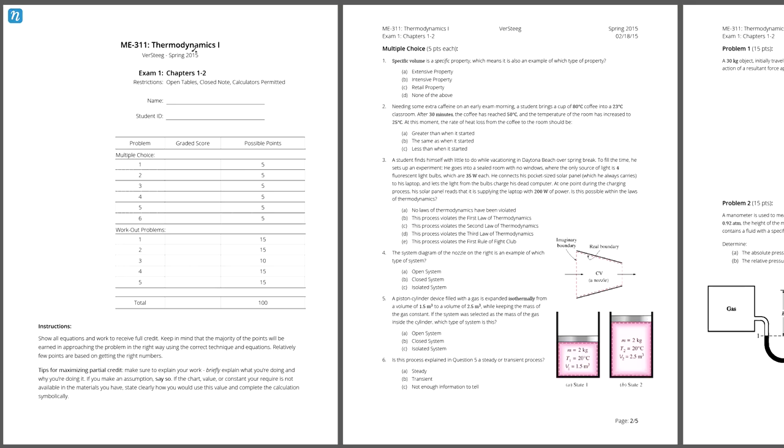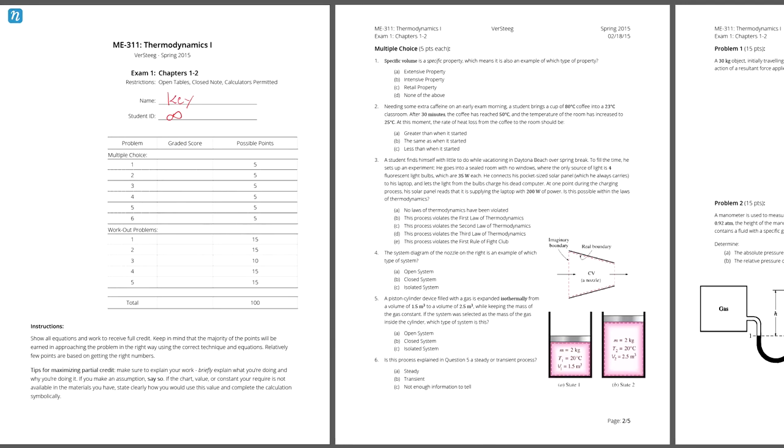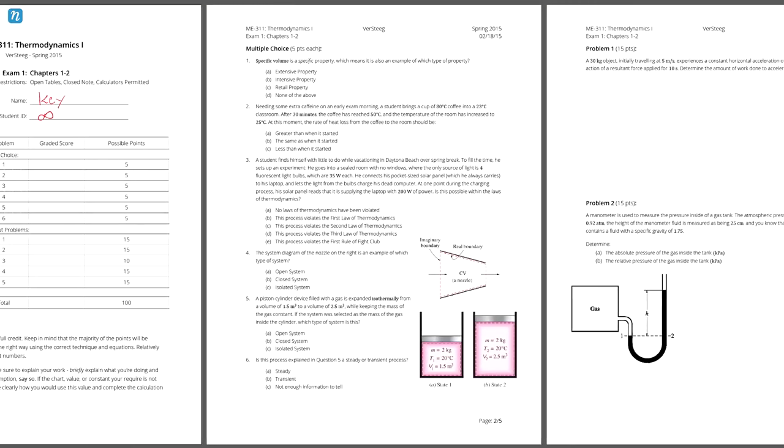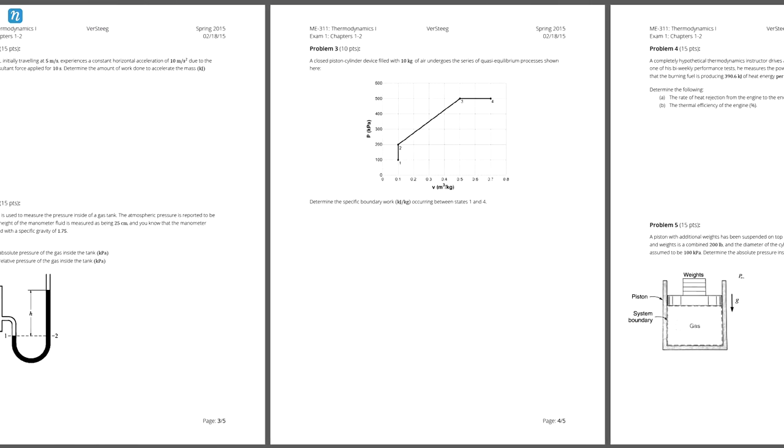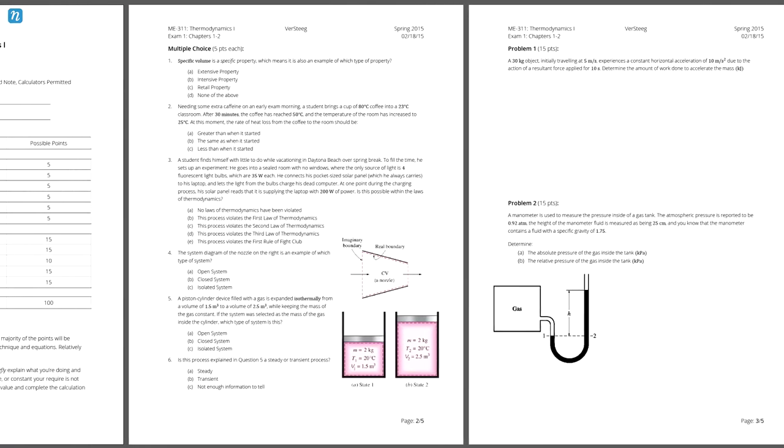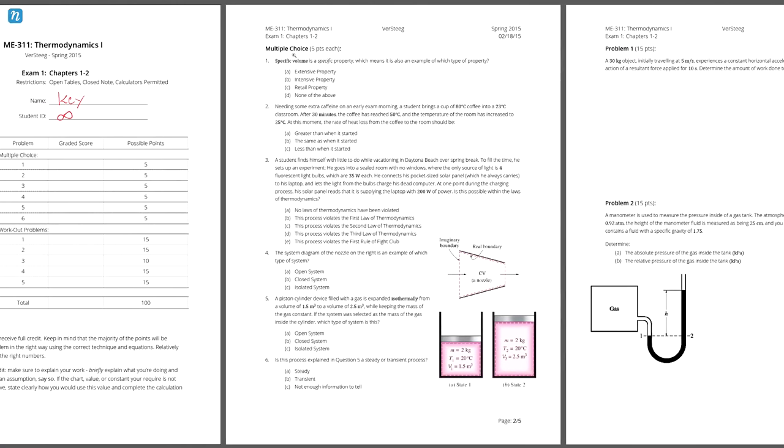This was the first exam from the spring 2015 semester of Thermo-1, and it covered chapters 1 to 2 from the Moran and Shapiro textbook. That being said, this was the semester when we were transitioning from the Cengel book to the Moran and Shapiro book, so this semester was a little bit of an overlap between the two. Regardless though, this exam had 6 multiple choice questions that made up 30% of the points, and then 5 workout problems which made up the other 70% of the points. And we'll launch directly into the multiple choice questions.